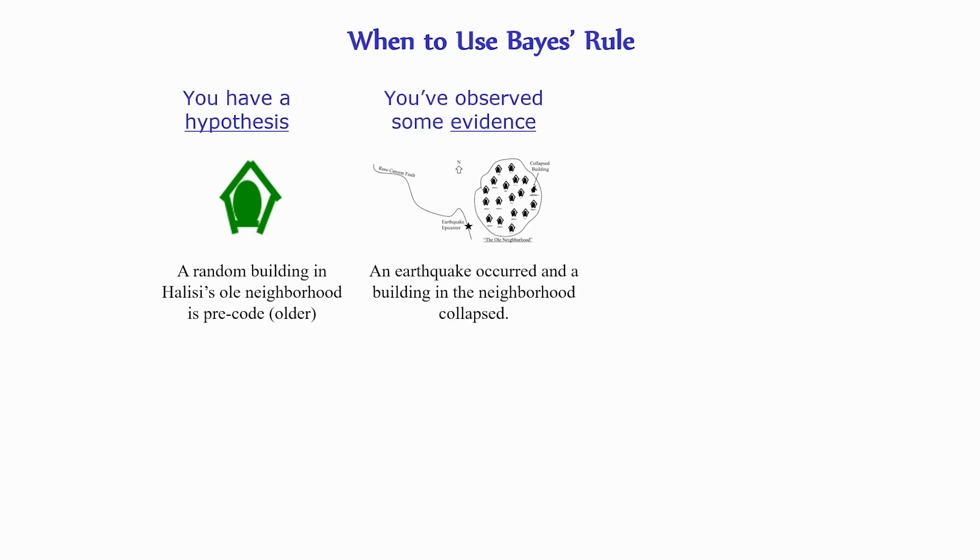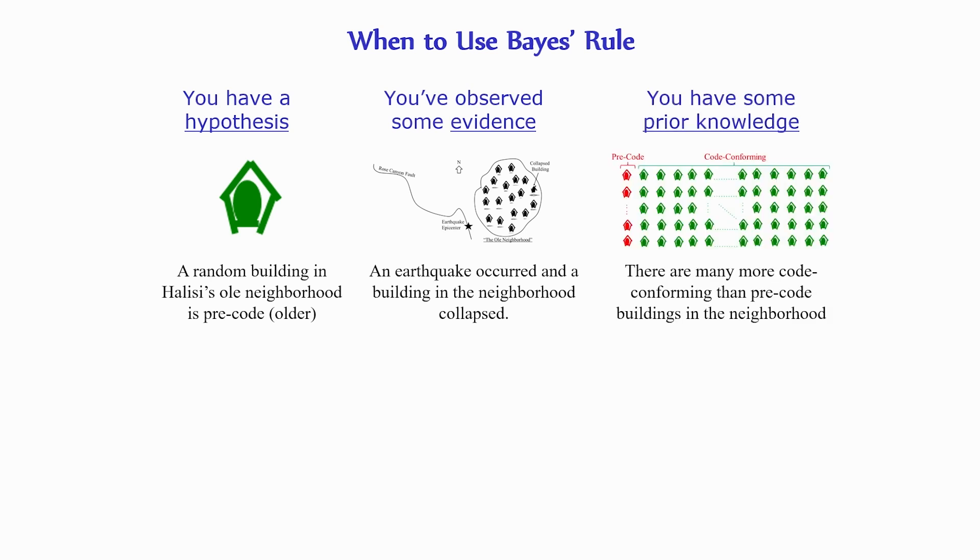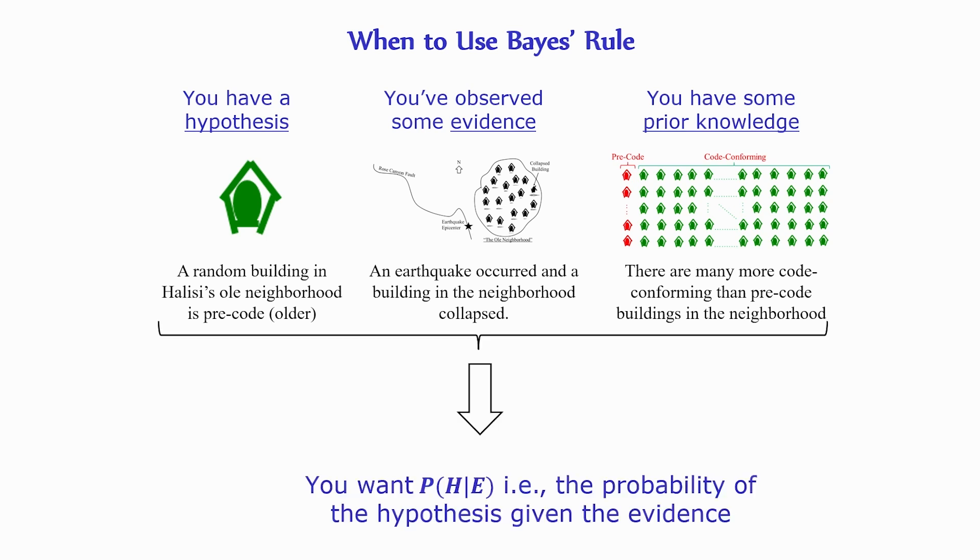Now thinking a bit more generally, the situations where Bayes theorem is applicable are those where you have some hypothesis, like a random building in Halisi's old neighborhood is pre-code or older construction. Then you see some new evidence, say that an earthquake occurred and a building in the neighborhood collapsed. You have some prior knowledge related to the hypothesis, such as the fact that there are 20 times the number of modern code conforming buildings in the neighborhood relative to pre-code buildings. And you want to use all these pieces of information to compute the probability of the hypothesis given the new evidence.